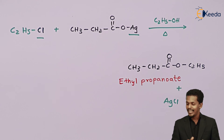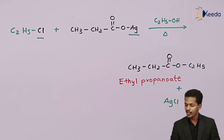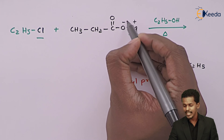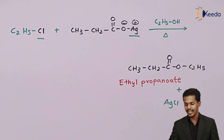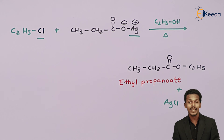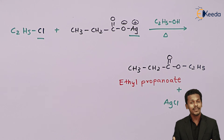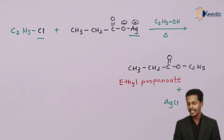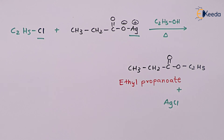In this reaction, the silver is partially positive and the acetate (carboxylate) is partially negative. Therefore the carboxylate acts as a nucleophile, and a nucleophilic substitution takes place. The byproduct AgX is either precipitated out or obtained as a solid.